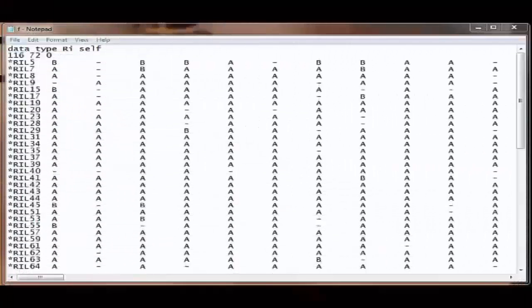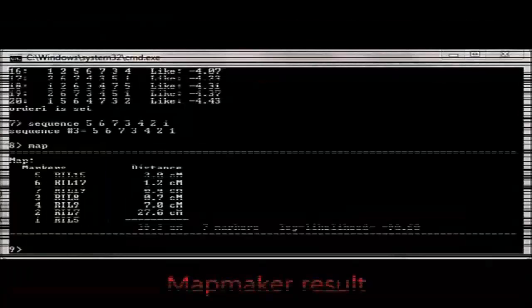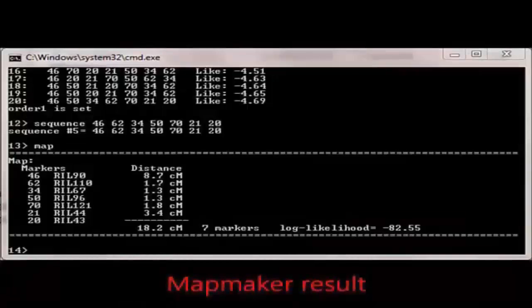This is the map maker data file for cotton. The very first line of the data file should read data type F2 self. The second line should contain a list of three numbers: the number of progeny, the number of genetic loci, and the number of quantitative traits in the data set. Here 116 SSR markers are used. Map maker is a software used to find the distance between the offspring.